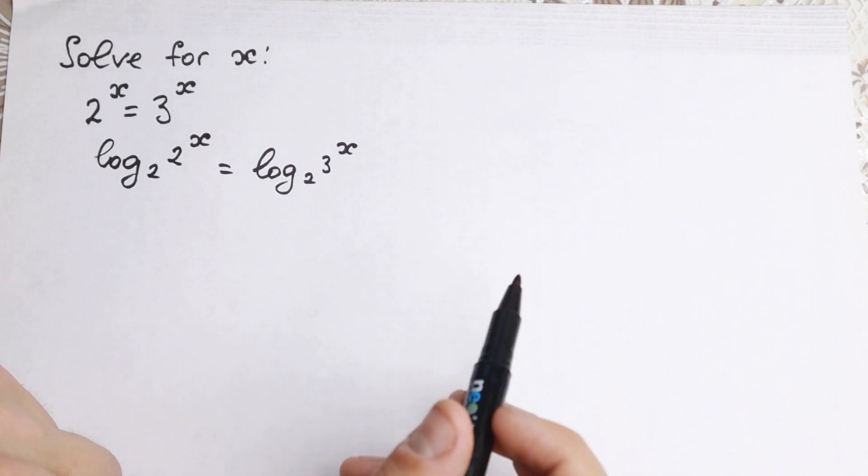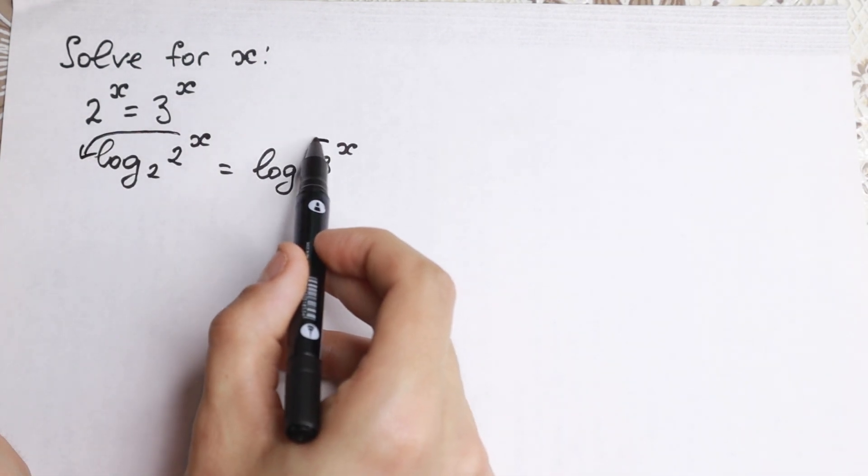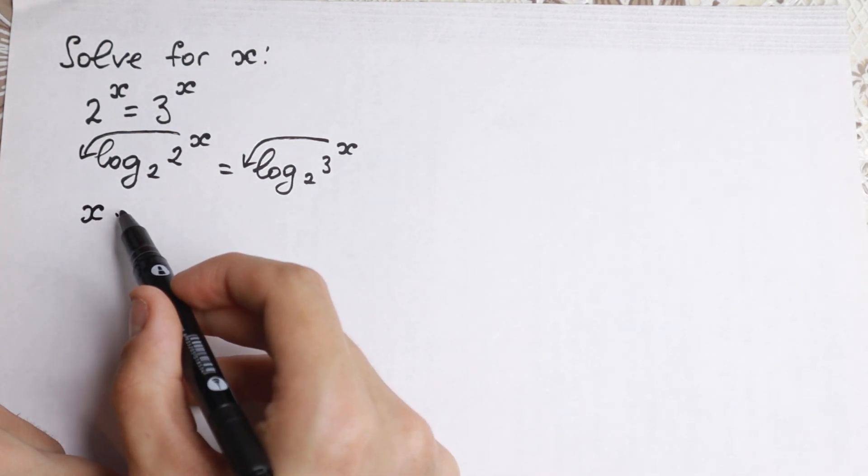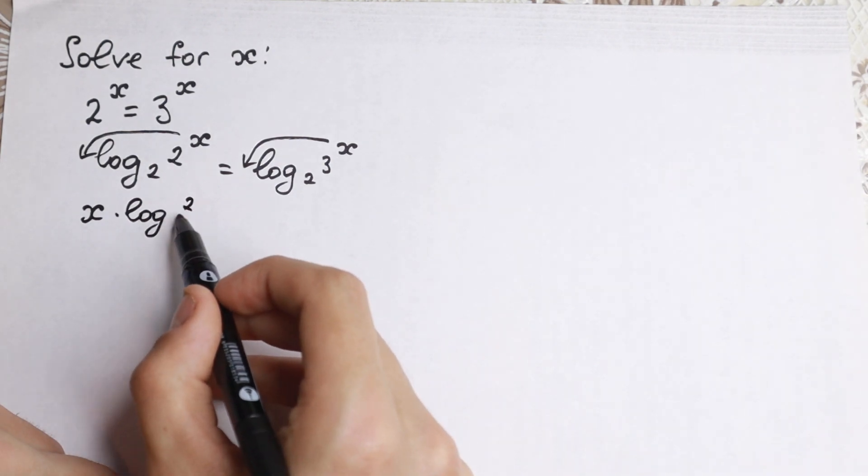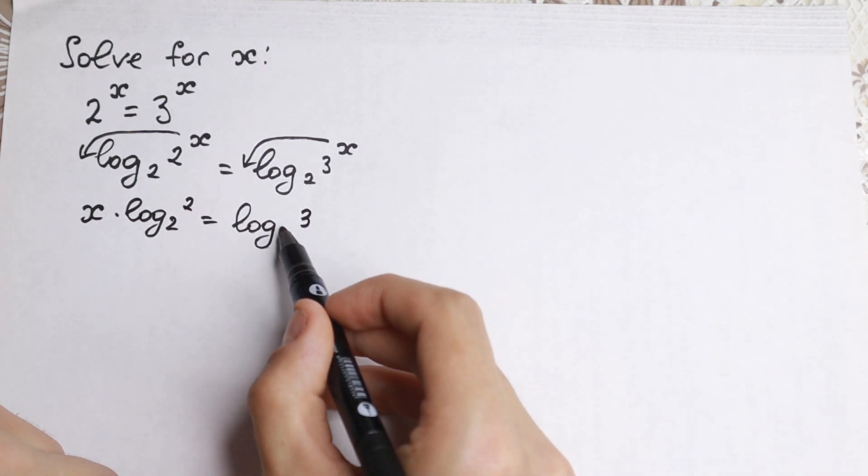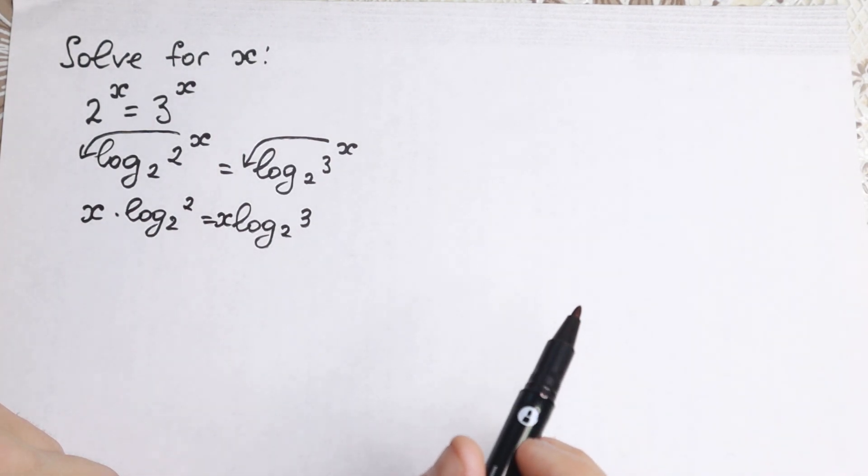Right now we need to know the log property. I hope everyone knows this. The x jumps to the beginning. So we have x times log₂(2) equals x times log₂(3). I hope you understand this step, just use the log property.